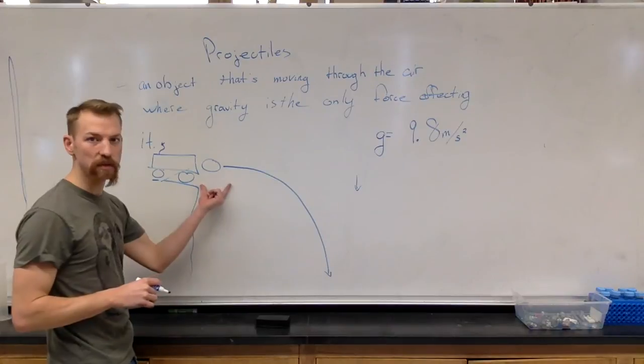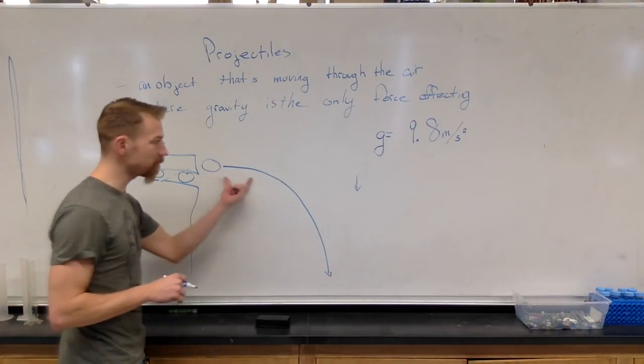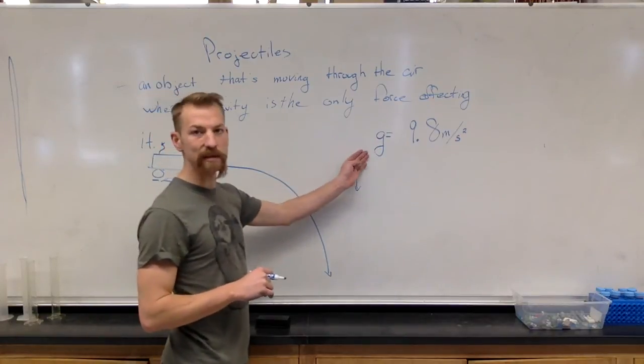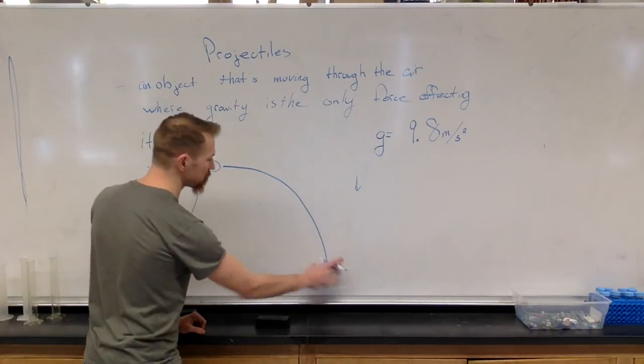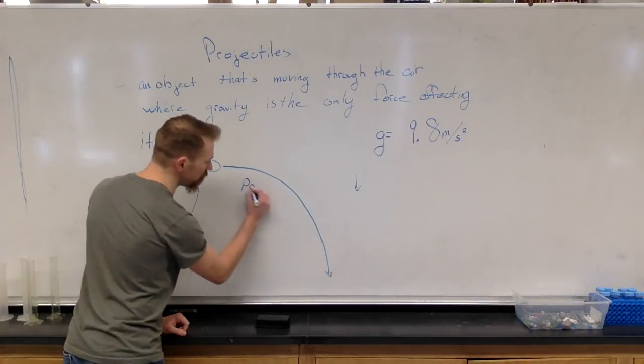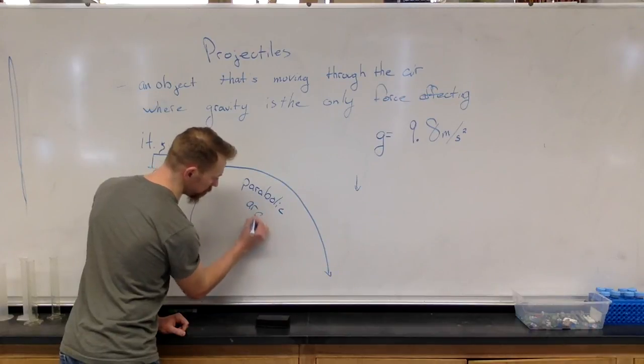Meaning at first, it's only pulling it down very slowly. But then as time goes on, this gravity keeps pulling, and this acceleration keeps happening, and we're going downward, downward, downward, faster, and faster, and faster. This is called a parabolic arc.